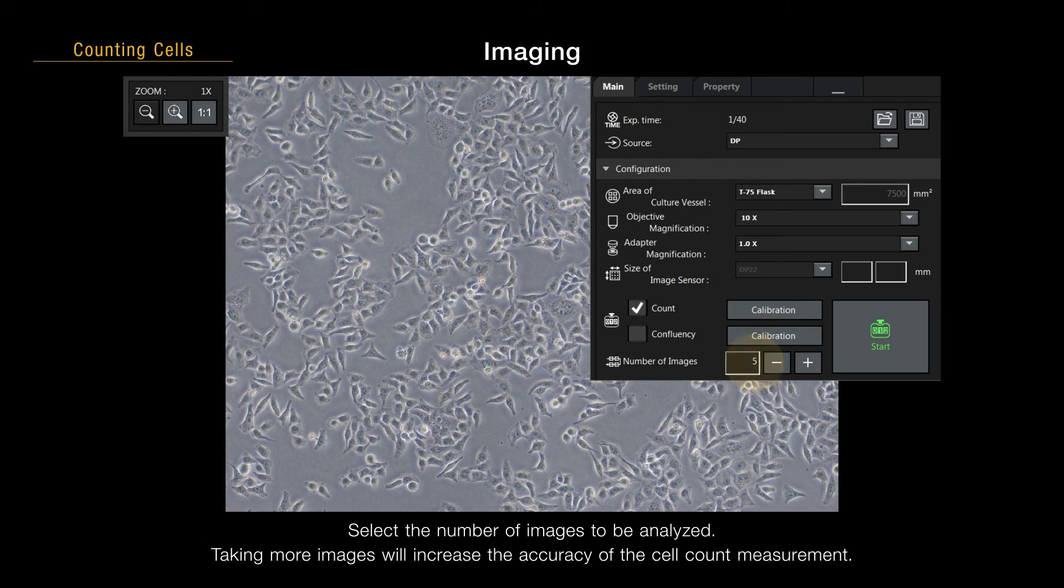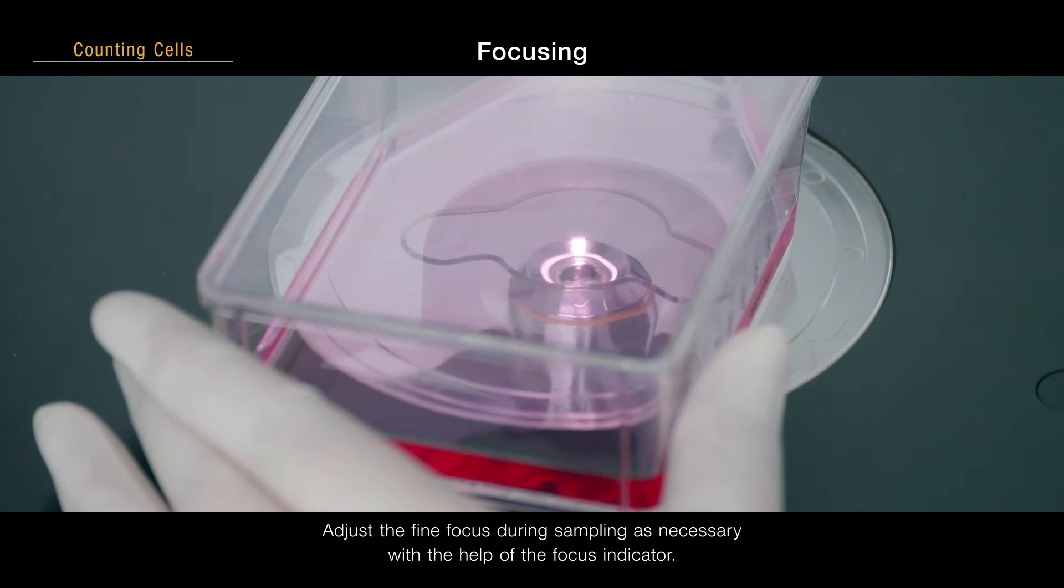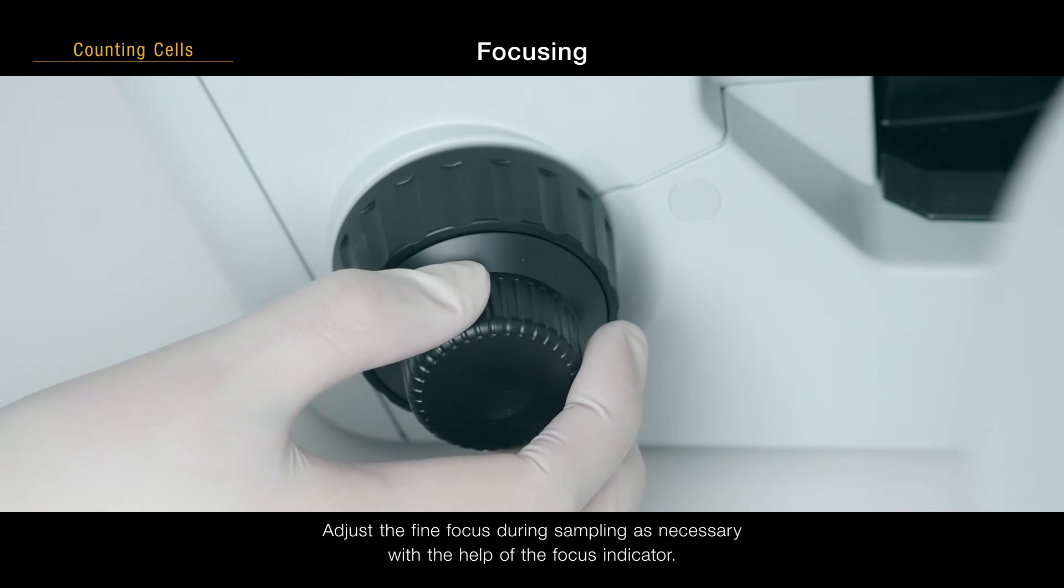Select the number of images to be analyzed. Taking more images will increase the accuracy of the cell count measurement. Adjust the fine focus during sampling as necessary with the help of the focus indicator.